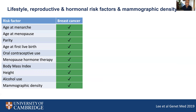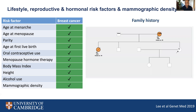Finally, the model also includes several epidemiological risk factors. In particular, the model includes the effects of age at menarche, age at menopause, parity, age at first live birth, the use of oral contraceptives, use of menopausal hormone therapy, body mass index, height, and alcohol use. It also includes the associations between mammographic density and breast cancer risk, as well as information on cancer in close relatives.